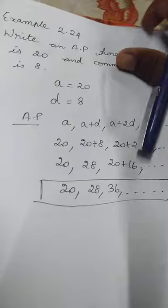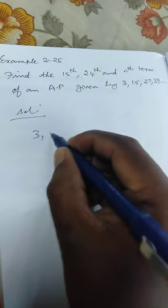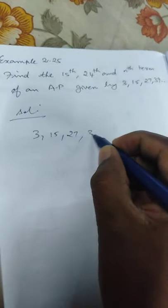Then the next one is example 2.25. Find the 15th, 24th and nth term of an AP given by solution 3, 15, 27, 39.